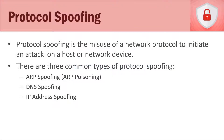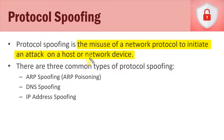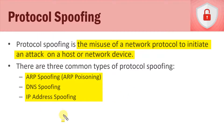In this video, we're going to talk about protocol spoofing. So what is protocol spoofing? It's the misuse of a network protocol to initiate an attack on either a host or a network device. There are three common types we need to know about for this certification: ARP poisoning, DNS spoofing, and IP address spoofing. We're going to talk about each of these on their own dedicated slide with a diagram. Understand that you don't need to know exactly how they work, because this is not an ethical hacking course.